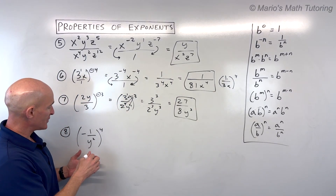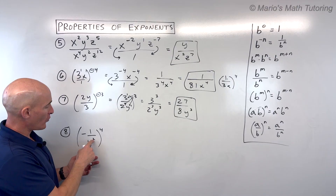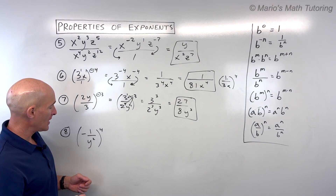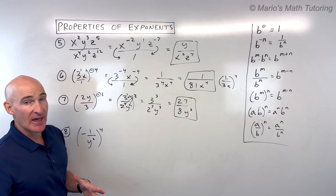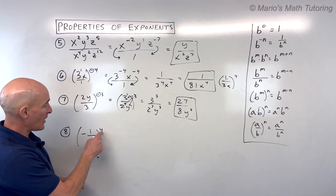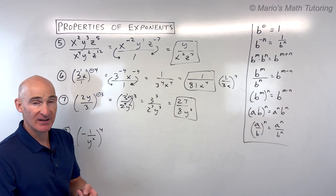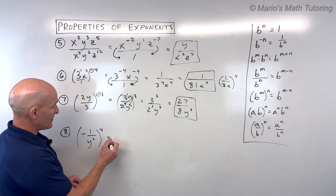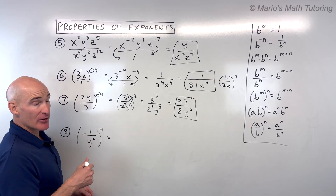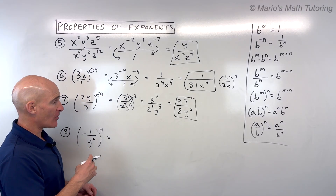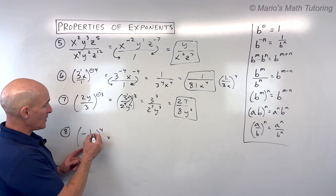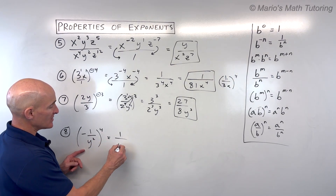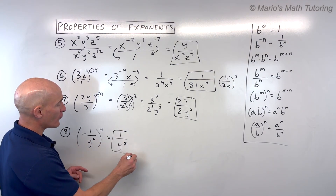For number 8, we have negative 1 over y squared, all to the 4th power. Notice the negative: a negative raised to an even power is positive, raised to an odd power is negative. Since this is to the 4th (even), the negative becomes positive — so the numerator is 1. Power to power, multiply: 2 times 4 is 8. This simplifies to 1 over y to the 8th.